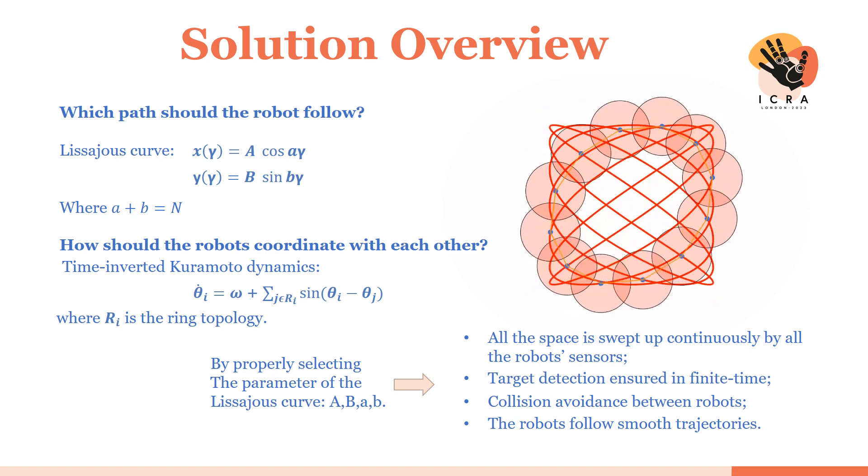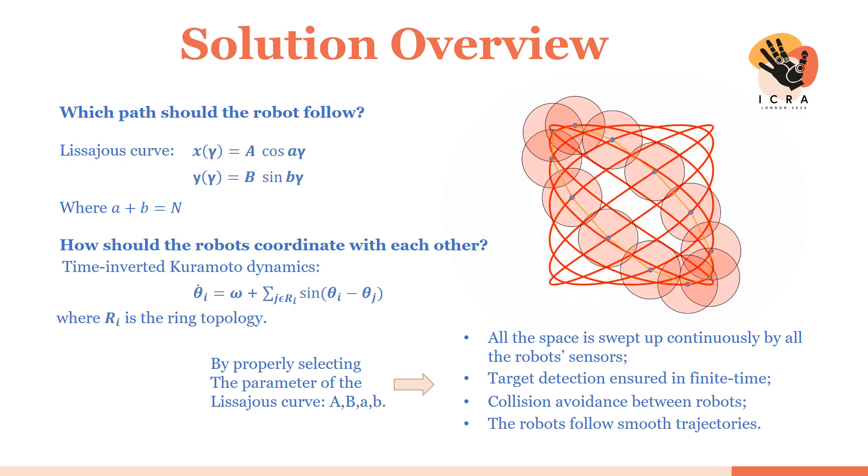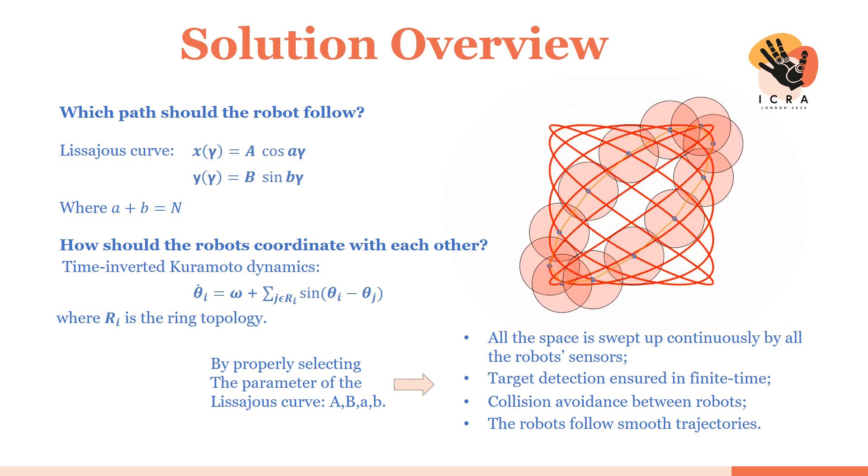In the simulation here we depicted with a solid red line the chosen Lissajous Curve. The robots are depicted as blue dots, the topology R is highlighted with orange lines, and the red circles define the sensing area of each robot.